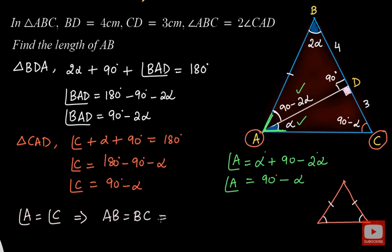We can say that the length AB is equal to the length BC. And from the figure, easily we can see that BC is nothing but BD plus DC, which is nothing but 4 plus 3. So the length AB is nothing but 4 plus 3, which is equal to 7 centimeters.